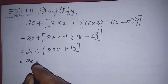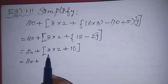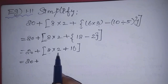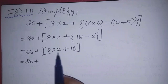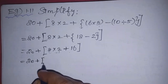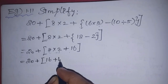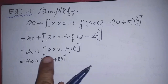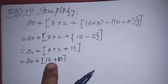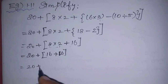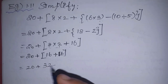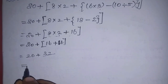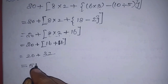Now inside the square bracket: 20 plus [8 into 2 plus 16]. There is multiplication and addition, so we multiply first: 8 into 2 is 16. Then 16 plus 16 is 32. The bracket is now removed. So the final answer is 20 plus 32, which equals 52.